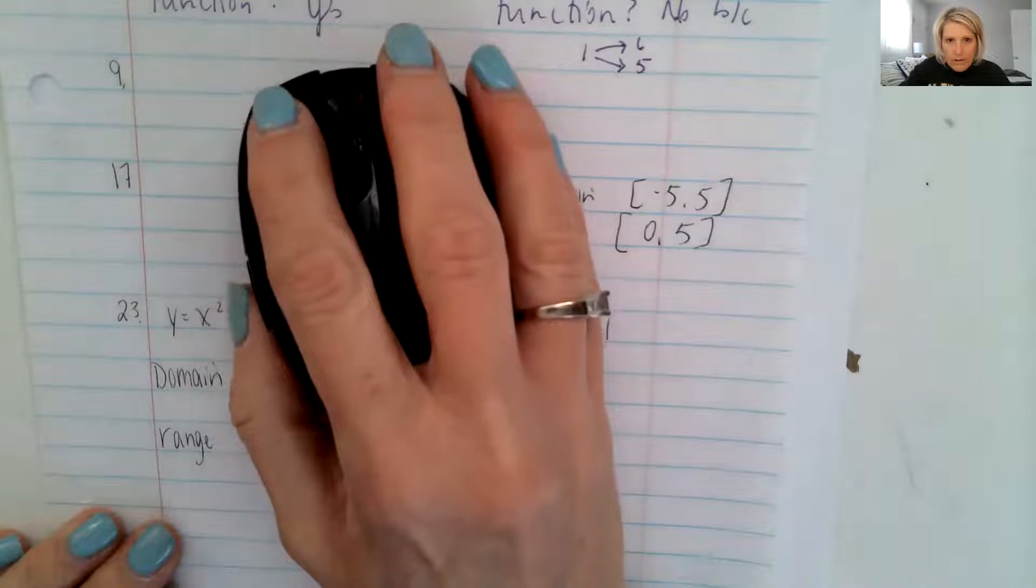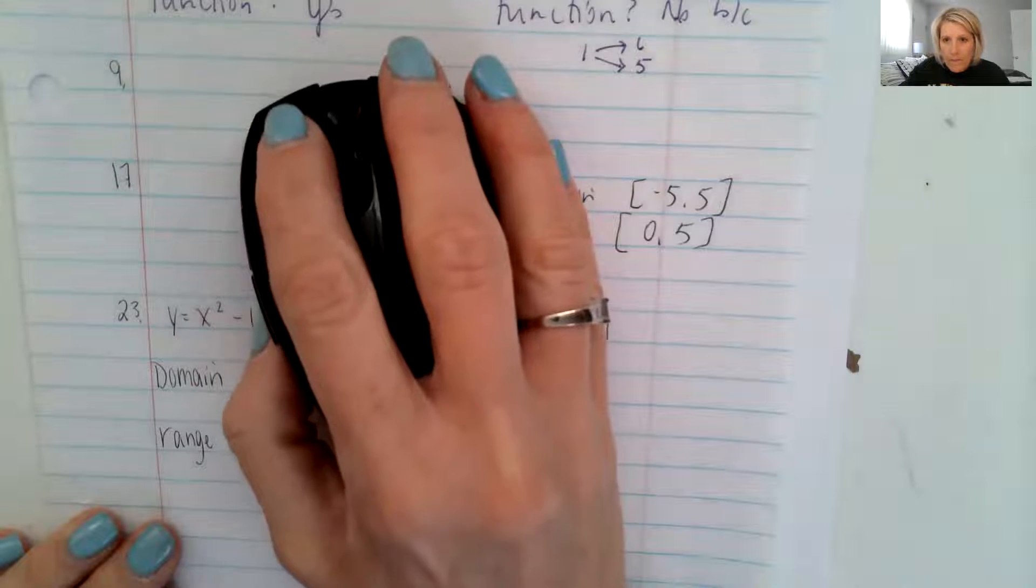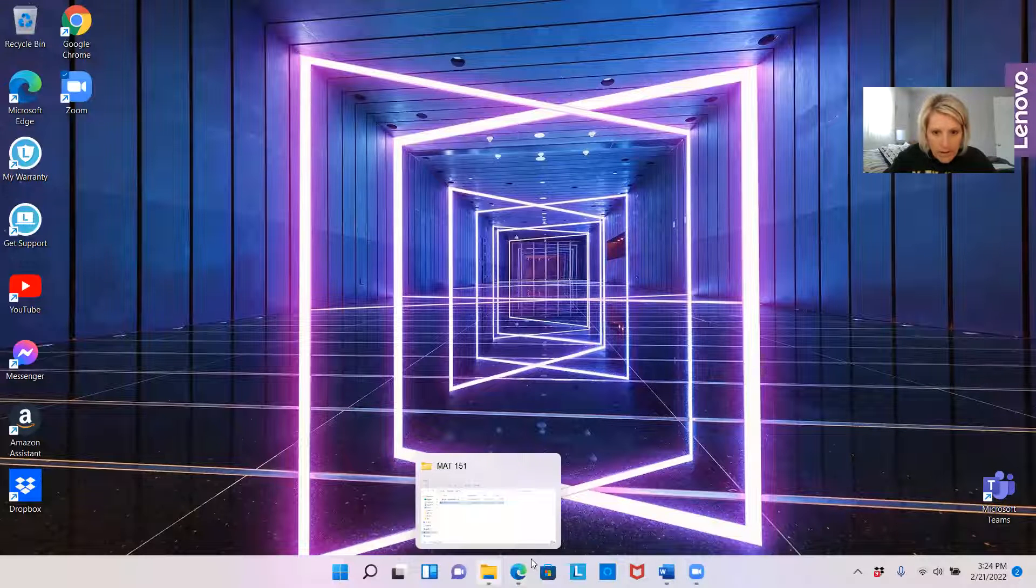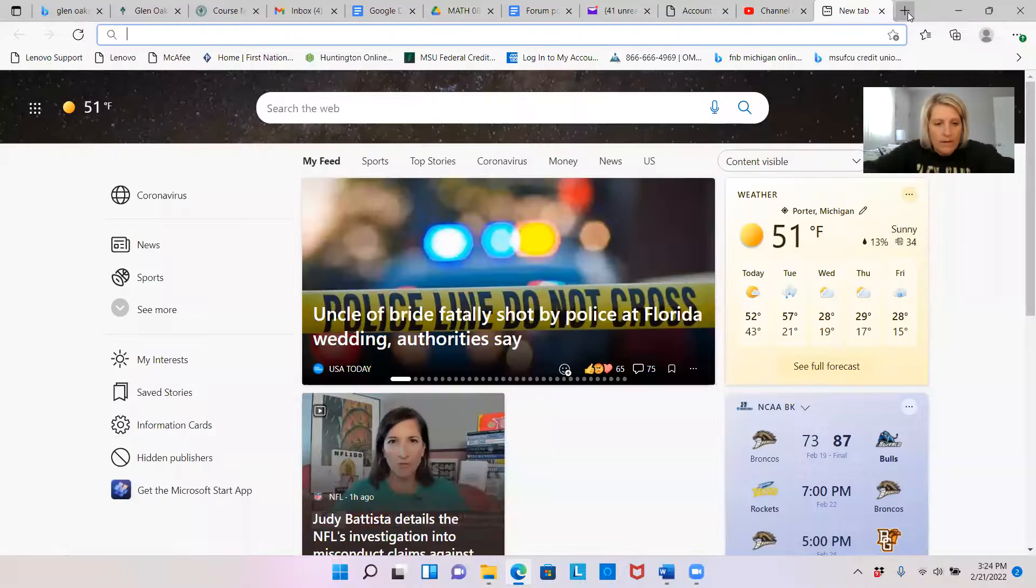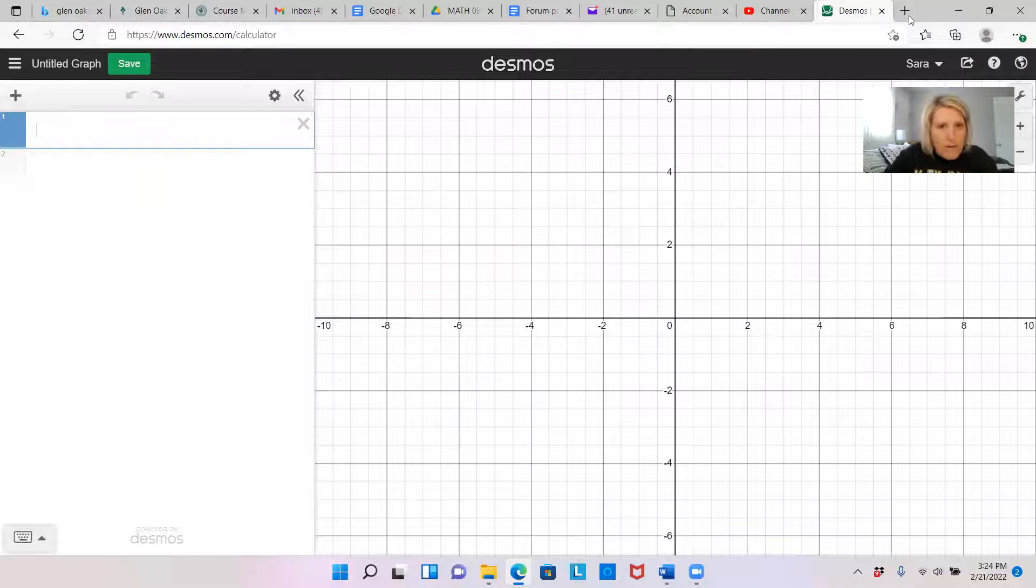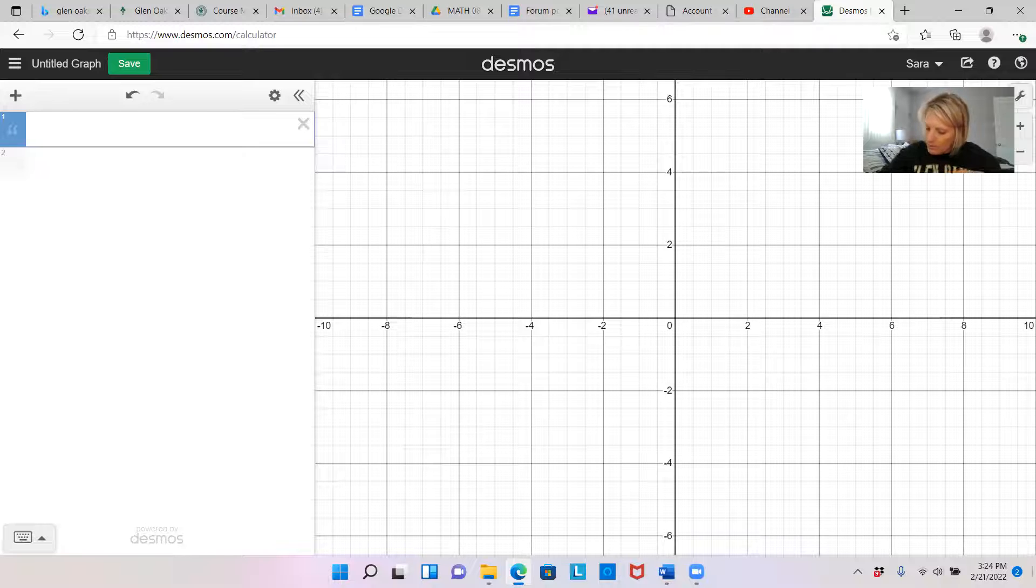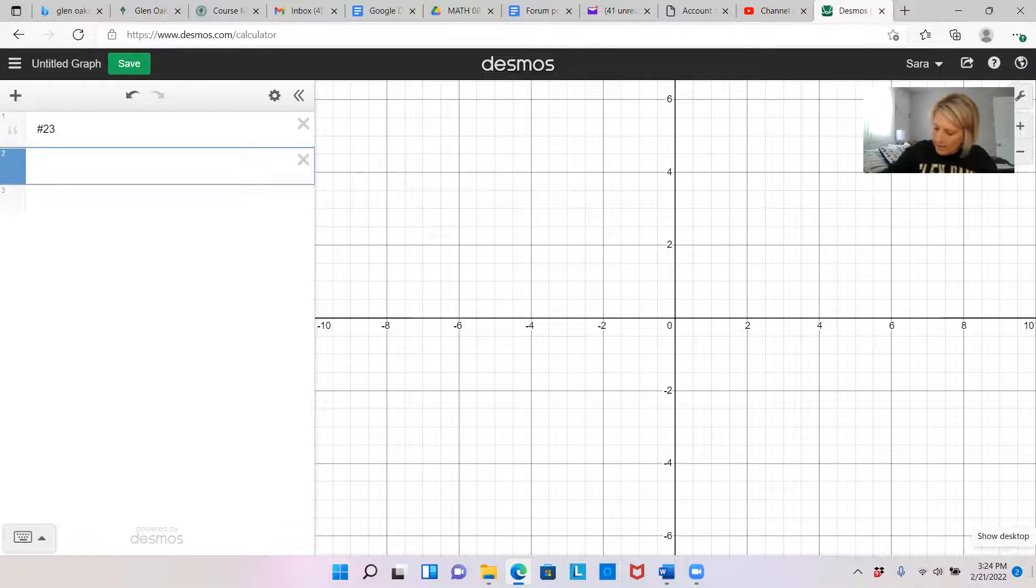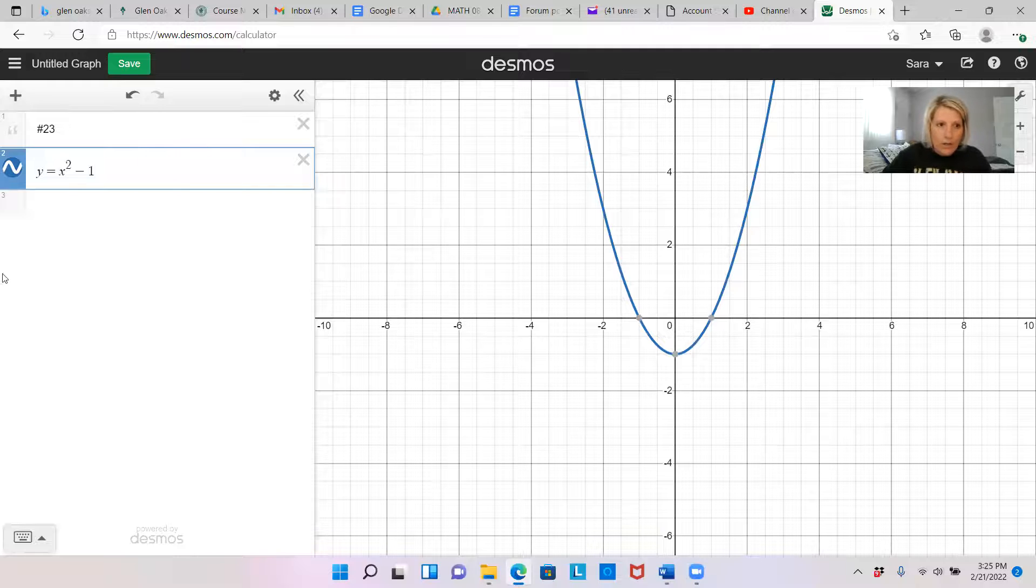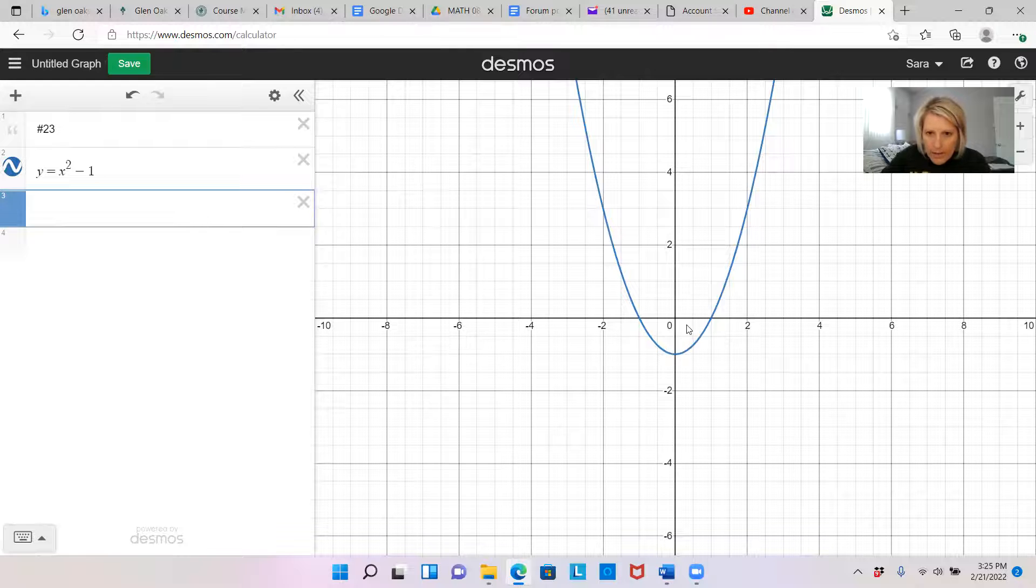And so we're going to put in y equals x squared. Make sure you go down to do the minus one. And because it's squared, you know that it's going to make this parabola shape. We've been kind of learning about those.